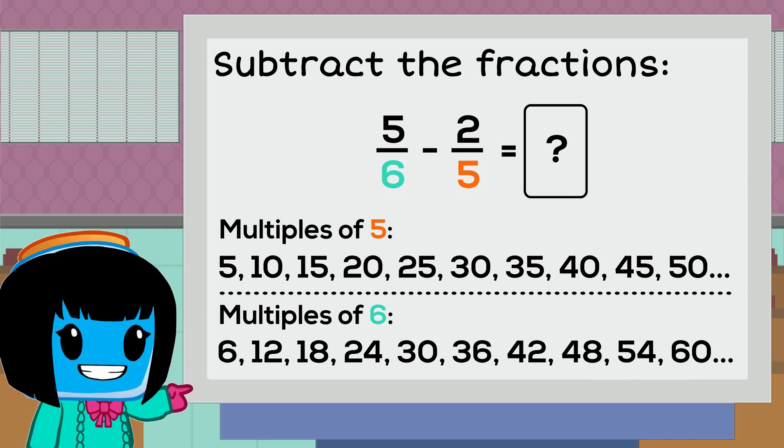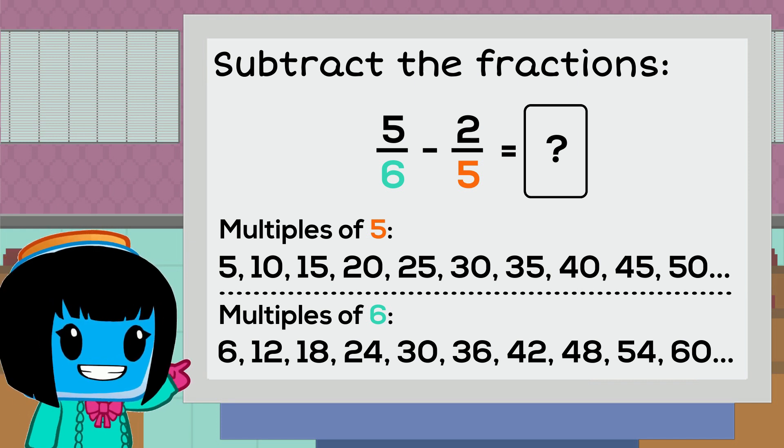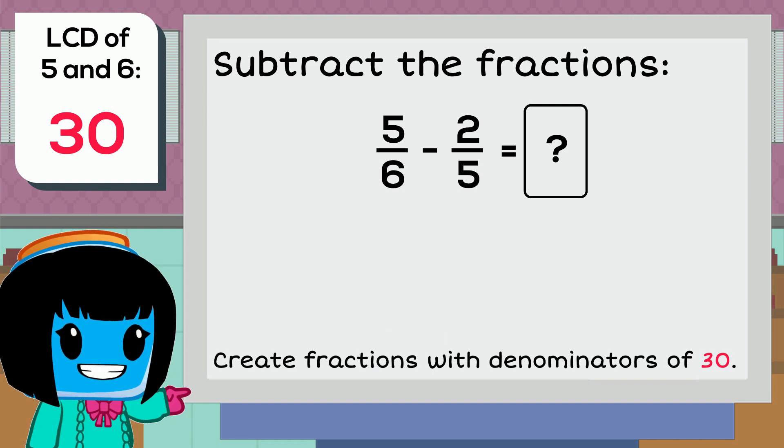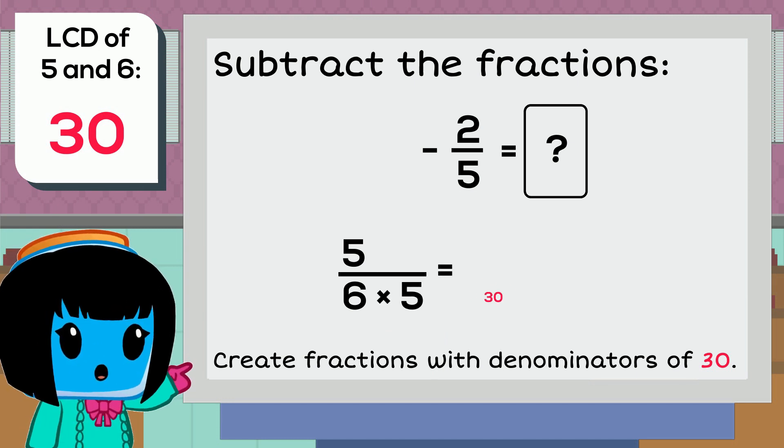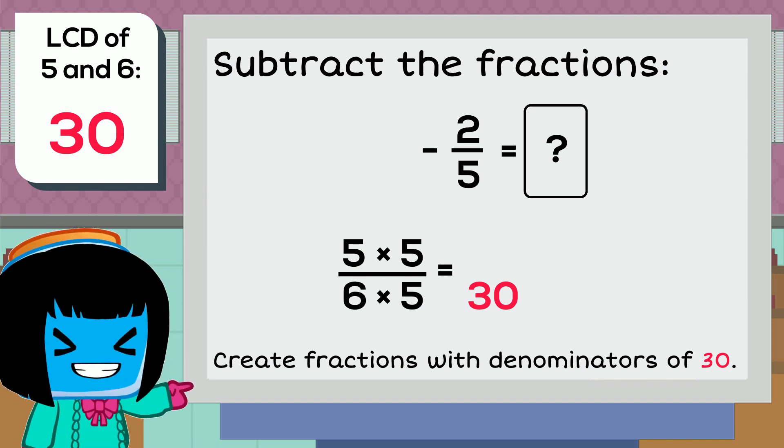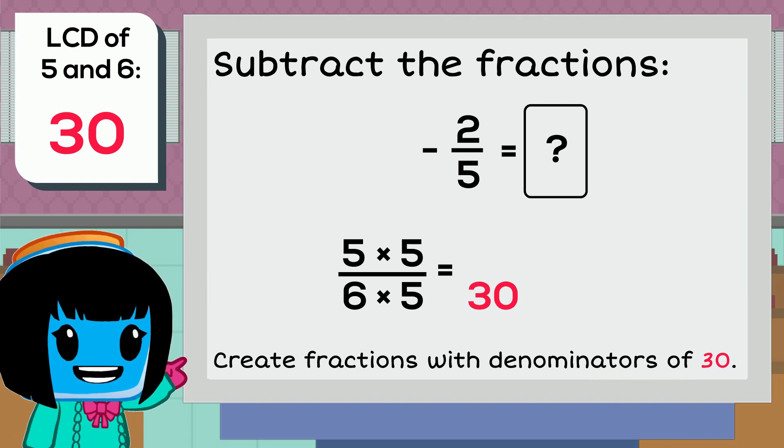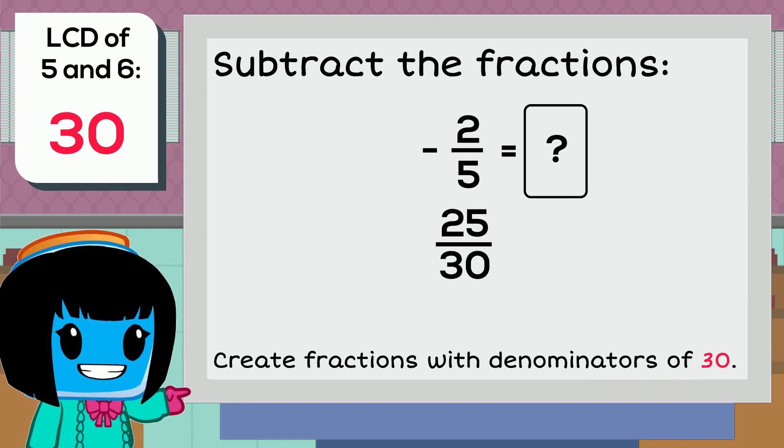If we compare the list of multiples, we see that the lowest common multiple of 6 and 5 is 30. We now need to create fractions with denominators of 30. In our first fraction, 5 sixths, we need to multiply 6 by 5. Whatever we do to the denominator, we also have to do to the numerator. So we need to multiply the numerator of 5 by 5 as well. Since 5 times 5 is 25, the equivalent fraction for 5 sixths is 25 thirtieths.